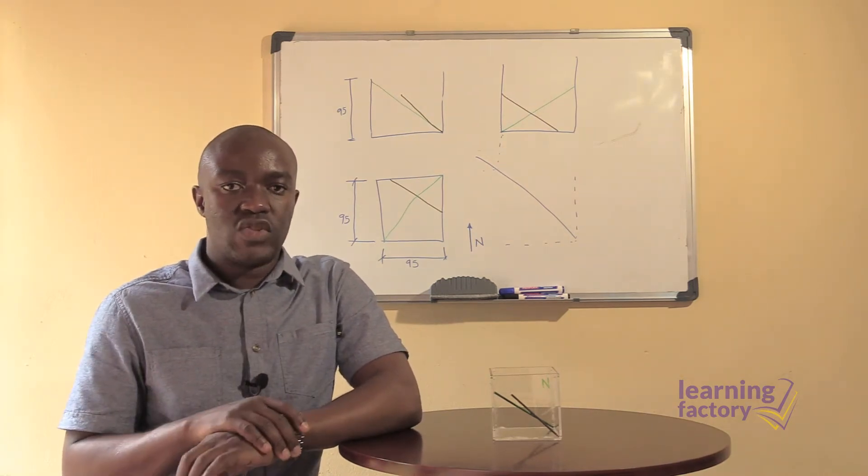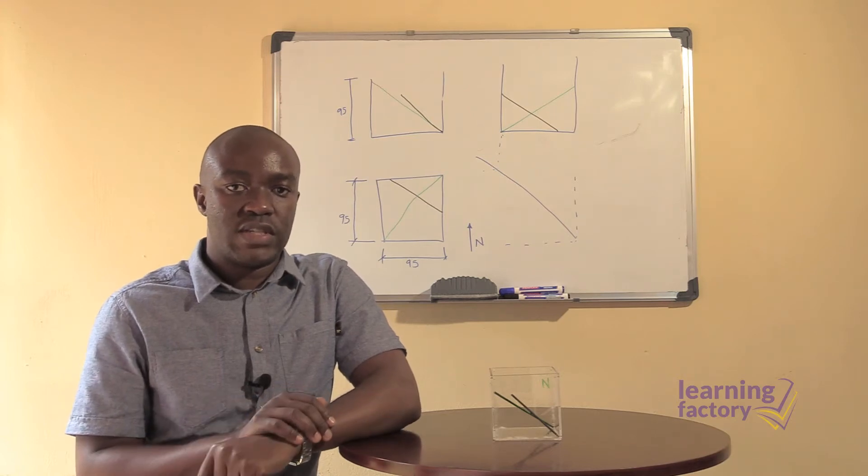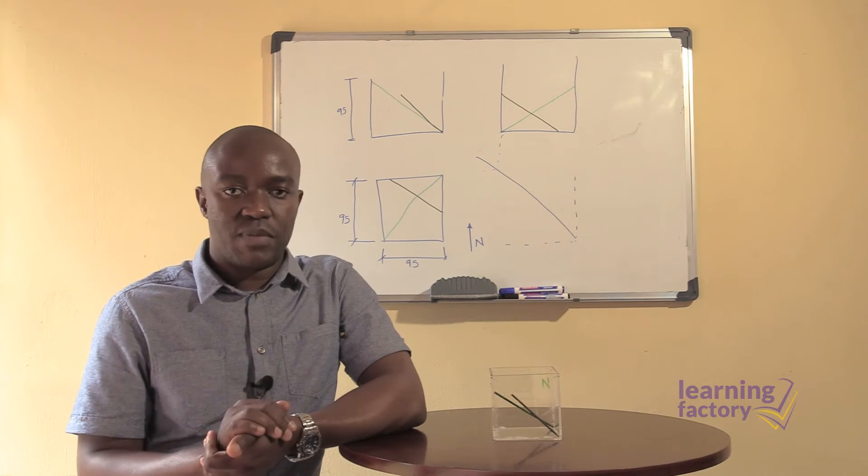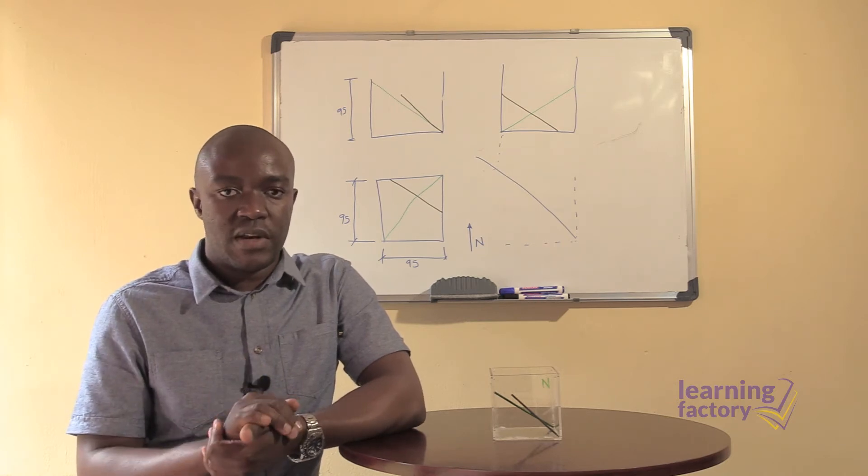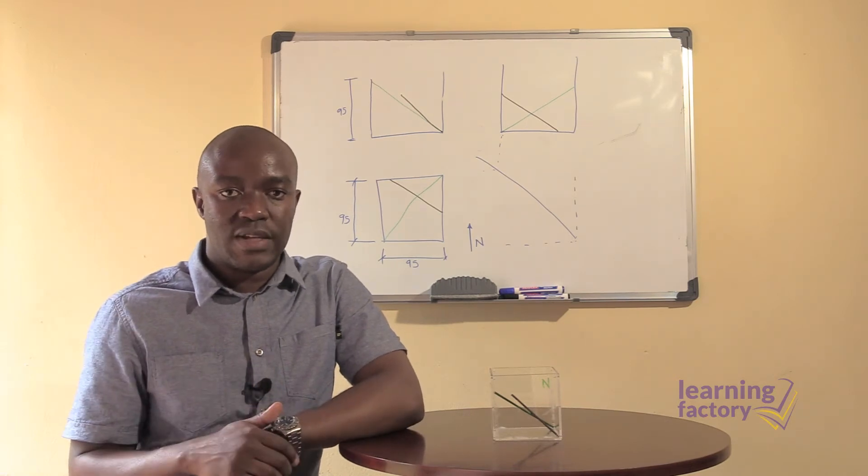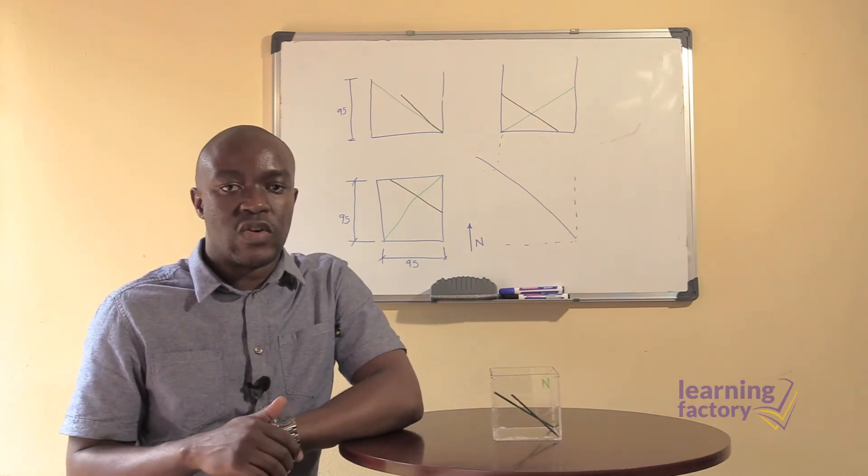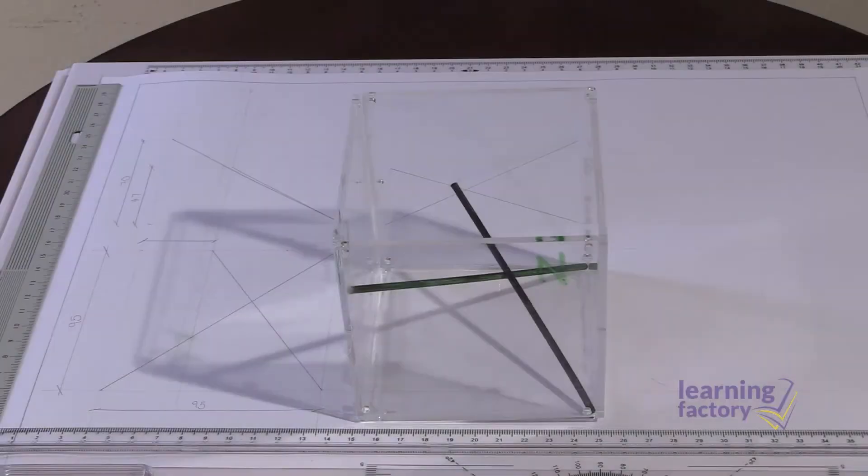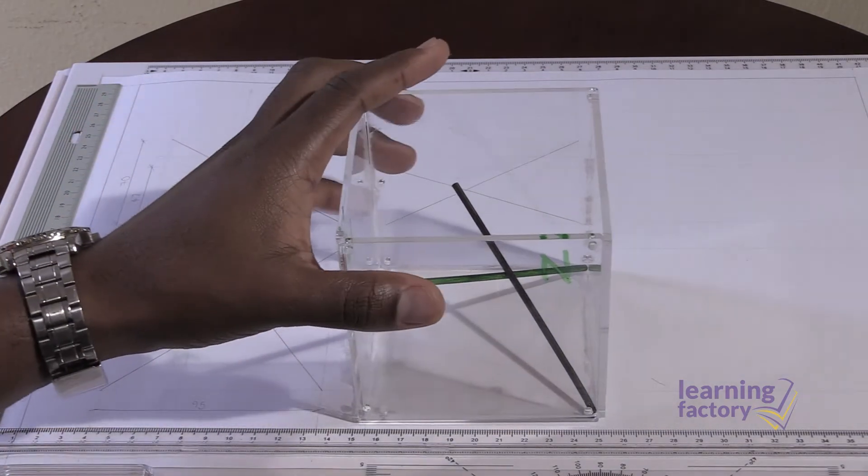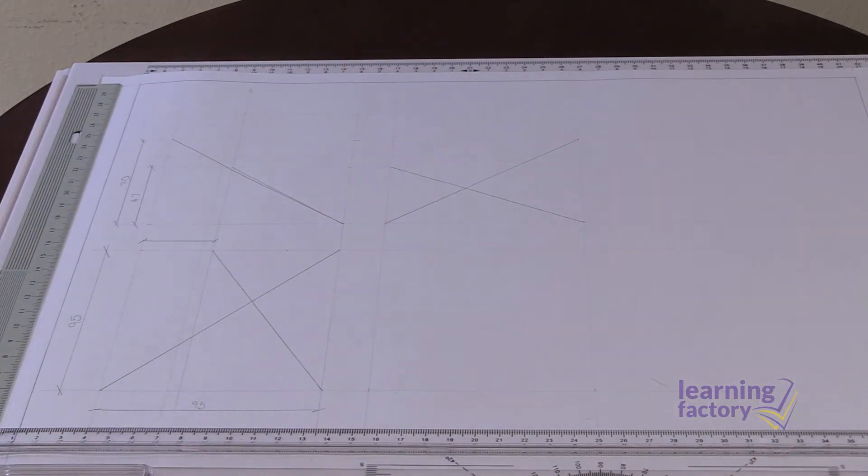This is where we need to determine the true length of the two sticks using geometry. There are two methods which can be used to determine the length of the two sticks. The first method is the rotation method and the second method is the auxiliary plane method. Having translated our demonstration box into sketches on paper, the next step is for us to straighten up the lines to be able to determine the true length of the two sticks in the cube.